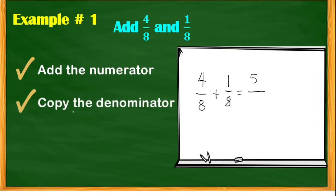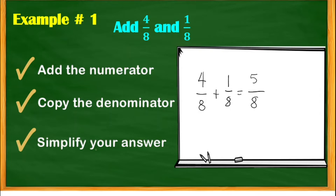The next step is you're going to copy the denominator, which is 8. Then simplify your answer. 5/8 is already in simplest form, so this would be the final answer because there is no common factor between the numerator and the denominator except 1.